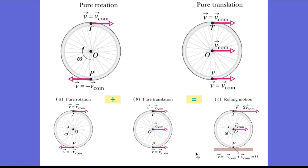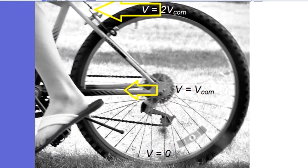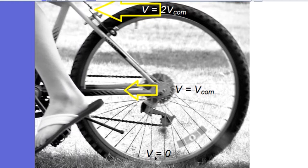Looking at a photo of a rolling wheel, even though it's moving to the left, you can see that at the bottom the velocity with respect to the ground at the point of contact is zero, the axis moves at VCOM, and the top moves at twice VCOM. The photo demonstrates this nicely: the spokes are blurry and out of focus at the top — because they're moving at twice the speed of the center of mass — while at the bottom they are sharp and in focus.